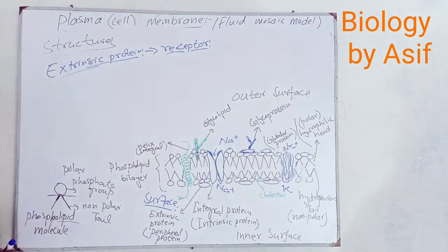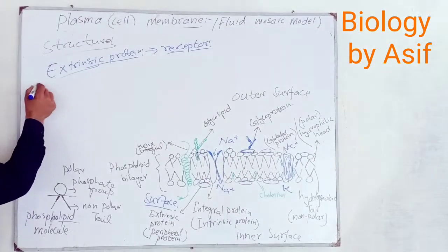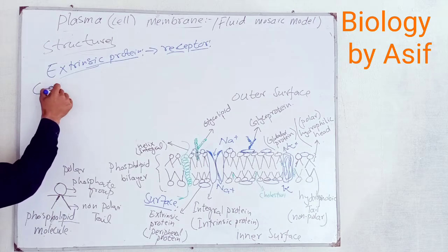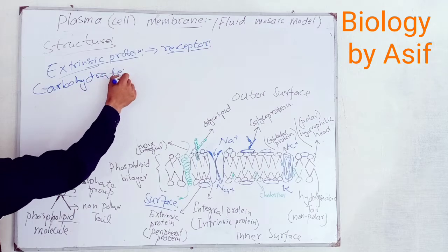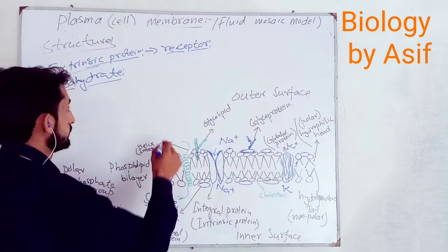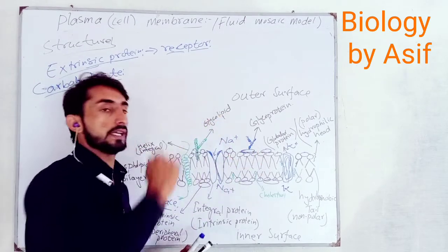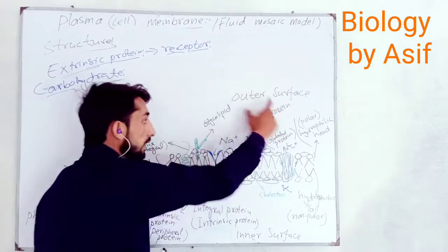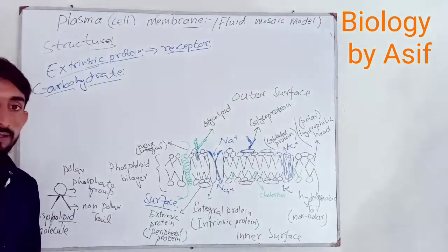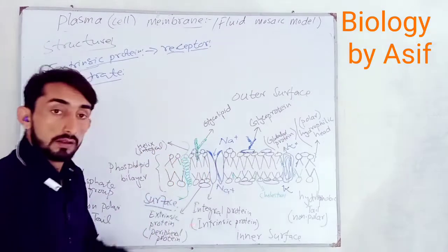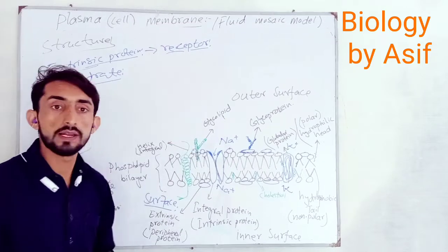Another component present in the cell membrane is carbohydrate. If this carbohydrate is attached to a protein, it is called glycoprotein. If it is attached to the hydrophobic lipid tail, it is called glycolipid.